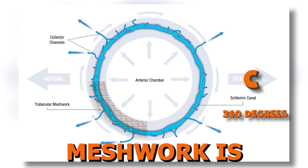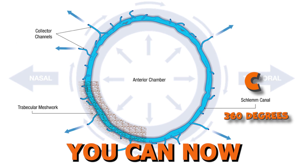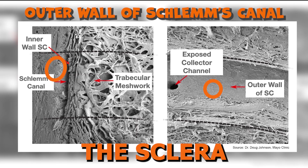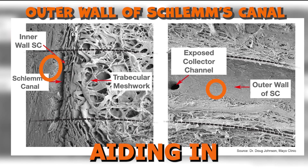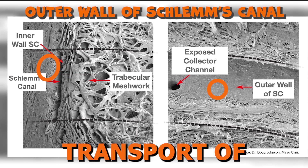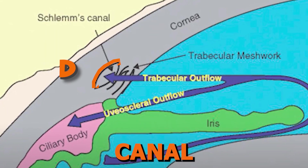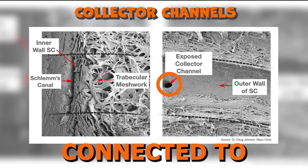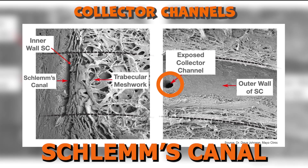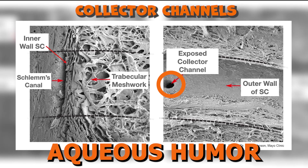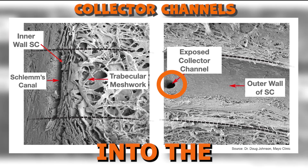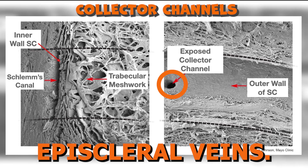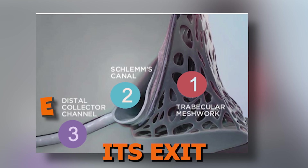When the trabecular meshwork is unroofed, behind it you can now see Point D, the outer wall of Schlemm's canal, which faces the sclera and connects to the collector channels, aiding in the further transport of aqueous humor out of the canal and into the episcleral venous system. Point E is the collector channels, which are small ducts connected to the outer wall of Schlemm's canal, responsible for transporting aqueous humor from Schlemm's canal into the episcleral veins, ultimately facilitating its exit from the eye.